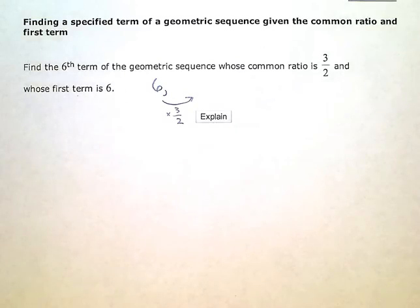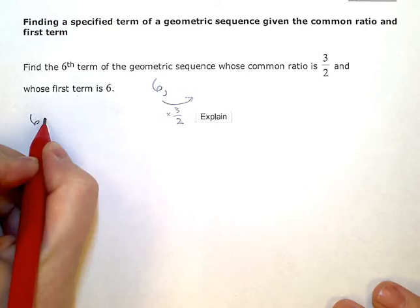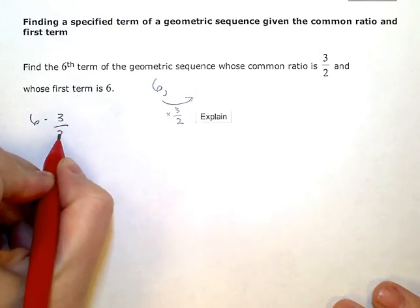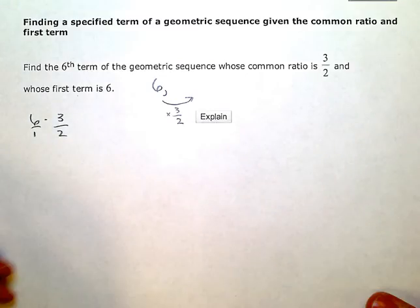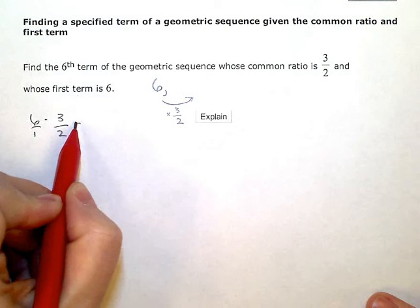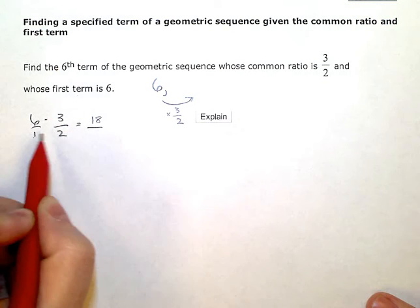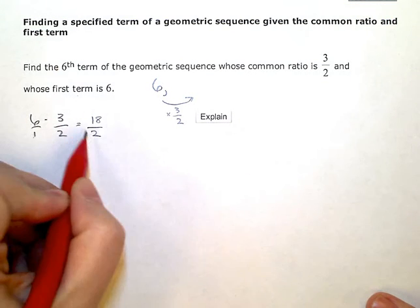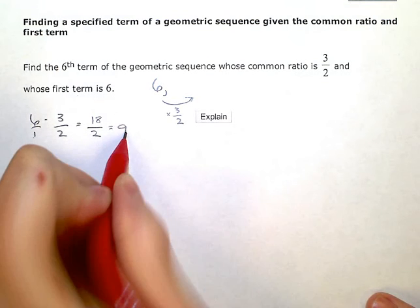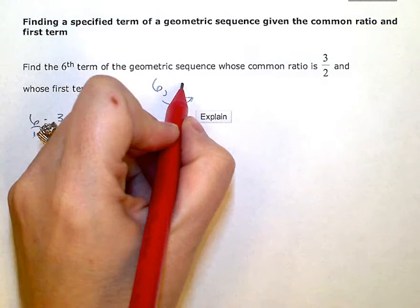Six times three halves. I'm just going to do it over here to the side. Six times three halves as fractions. Six times three is 18. One times two is two. Eighteen divided by two is nine. So I know my next term is nine.